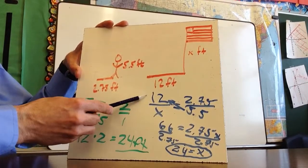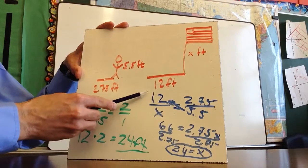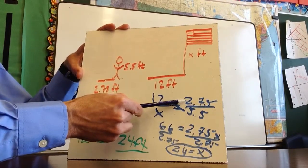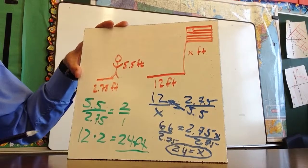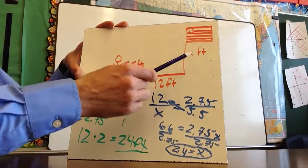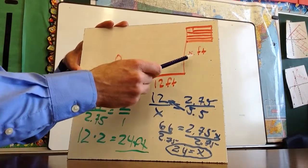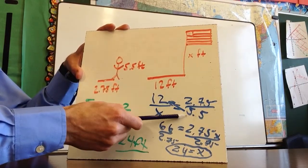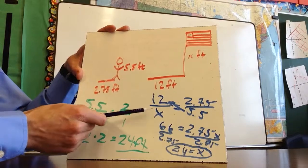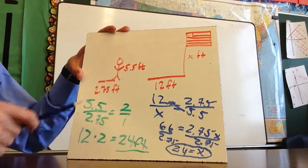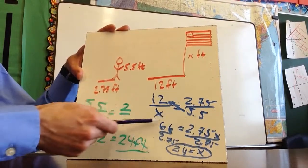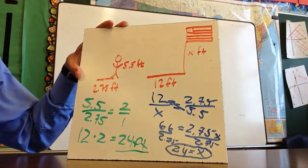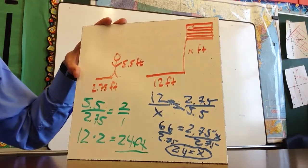Remember you could also reverse the order of the proportion. You could put X over 12 as the numerator and denominator, as long as 5.5 is the numerator and 2.75 is the denominator on the other side. So shadow over flagpole equals shadow over person — or you could do flagpole over shadow equals person over shadow — as long as corresponding measurements are consistently positioned in the fractions.